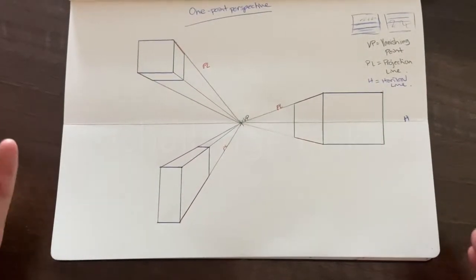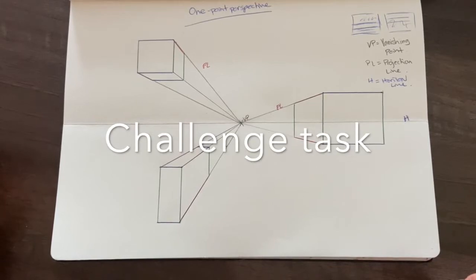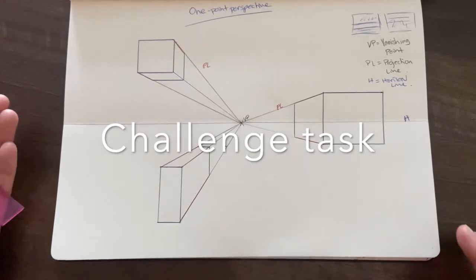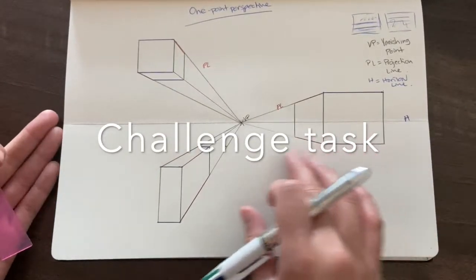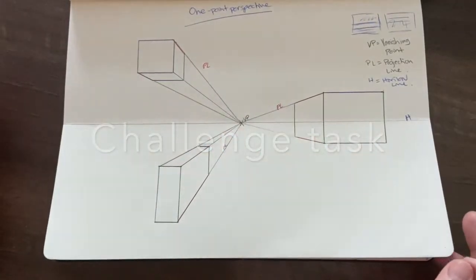I would like you to try creating shapes that are a little bit abstract, or if not, you can even use the initials of your name to create this one-point perspective look to make it look 3D.